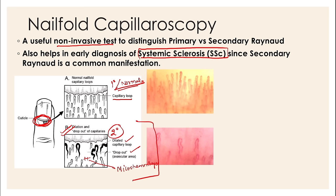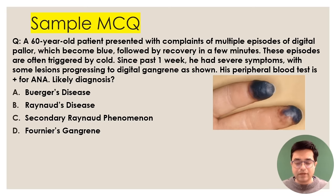If two images are shown and you're asked about nail fold capilloroscopy interpretation: in the first image — capillary loops are parallel, dense, and there are no missing loops — that is primary Raynaud's phenomena. In the second image — capillary loops are missing, more tortuous, and some early micro-hemorrhages are developing — that is secondary Raynaud's phenomena. This can be asked as a fresh question in the FMG exam.